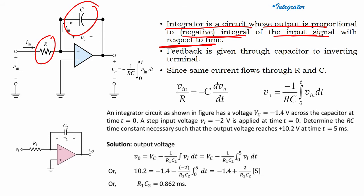If I solve it, what will I have? Vo would be minus 1 by RC, integrated from 0 to t, Vin dt. So Vo = −(1/RC) ∫₀ᵗ Vin dt. It will integrate the input signal Vin.